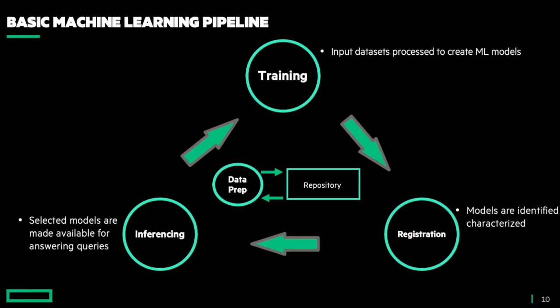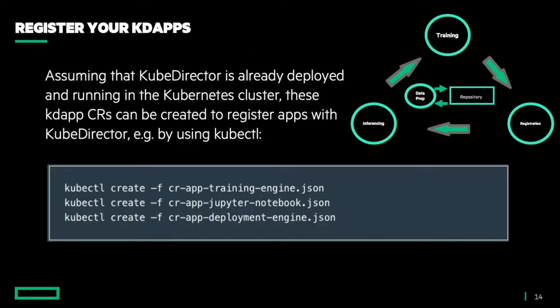With KubeDirector, we're going to implement a basic machine learning pipeline. We're going to show you how to create KubeDirector clusters — KD clusters — and KubeDirector applications — KD apps — to do training, registration, and inferencing, all around some central repository, making that all dynamic. To run our pipeline, we need KubeDirector to manage three stateful applications: a training engine, a Jupyter notebook, and a deployment engine. They're all defined in JSON format available on the KubeDirector GitHub and are deployed into our Kubernetes cluster using simple kubectl commands.